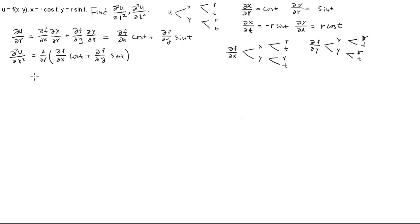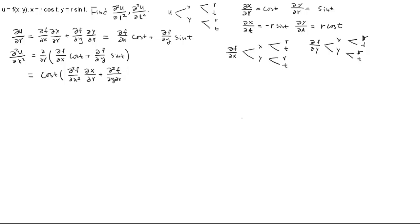When we take the derivative with respect to r, cos(t) is a constant, so it pulls out. Applying the chain rule to f_x gives a second-order derivative f_xx times ∂x/∂r, plus a mixed derivative f_yx times ∂y/∂r. So the first part contributes cos(t) times [f_xx·cos(t) + f_yx·sin(t)].